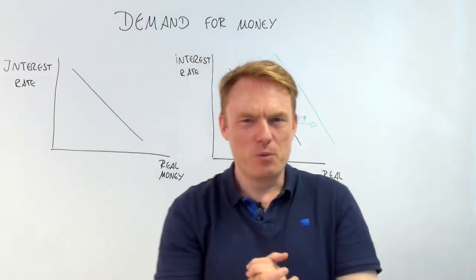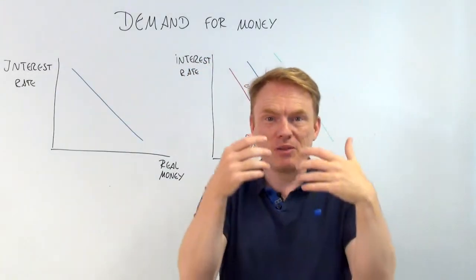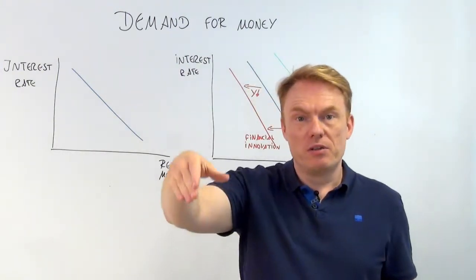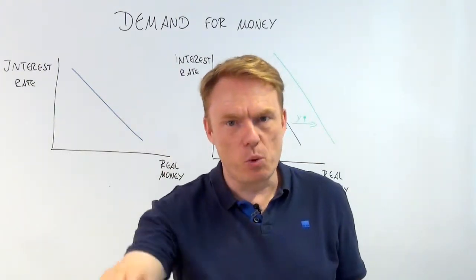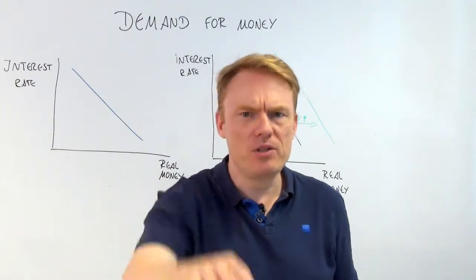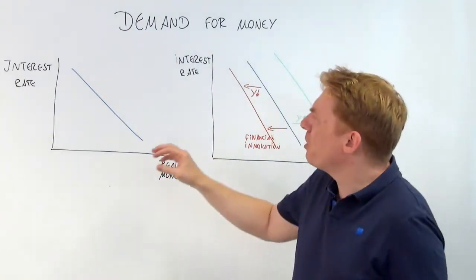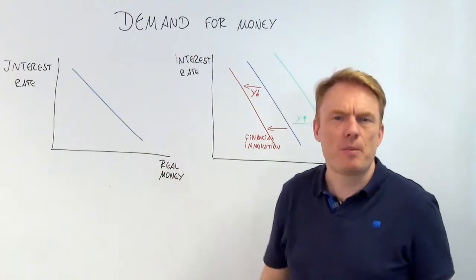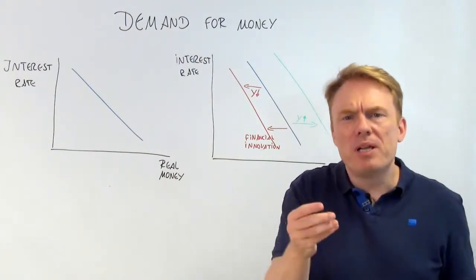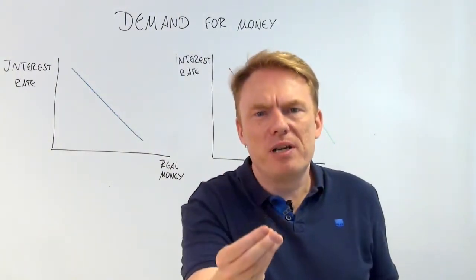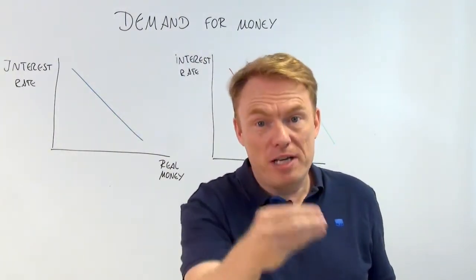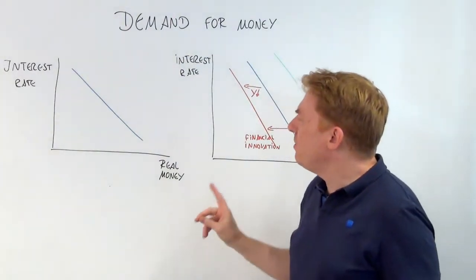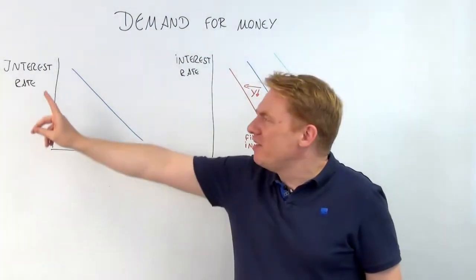Welcome to our next video. We need to talk about the demand for money. We've been talking about supply of money in different videos with M1 and M2. We will now be talking about the demand for real money. Real money is the amount of money divided by the price level.